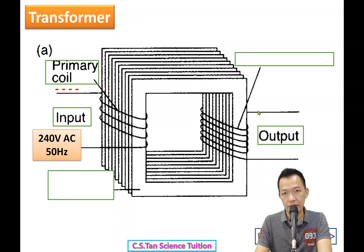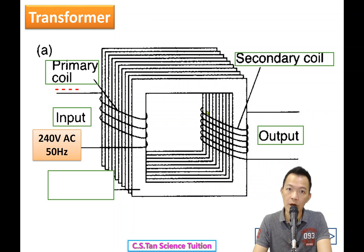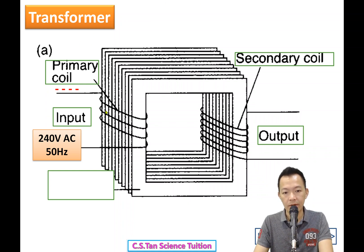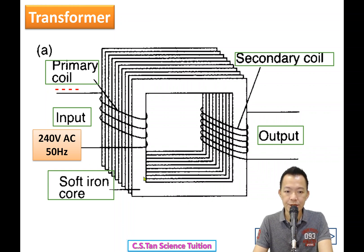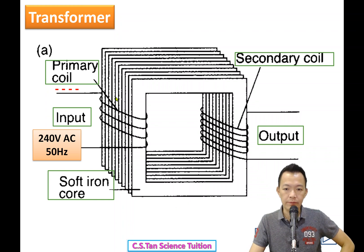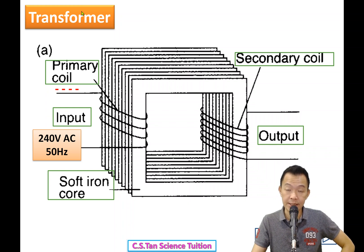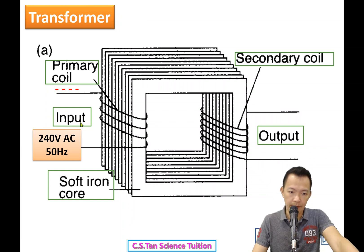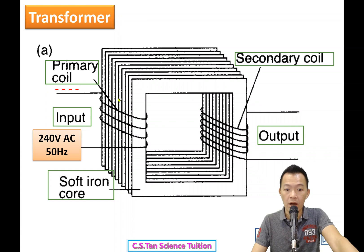The output side has the secondary coil, also made of copper wire. Both primary and secondary coils are wound around a soft iron core. The soft iron core is made of iron laminations — iron blades stuck together. So the basic structure of a transformer is: input, output, primary coil, secondary coil, and a soft iron core.